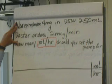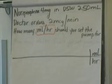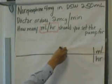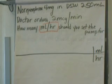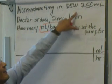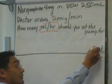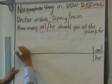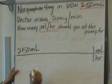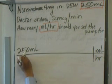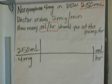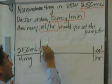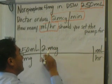Every other piece of information they give us is going to fall above or below this line. If anything shows mL, mL has to be on the top of the line. If anything says hours, hours has to be on the bottom. So, Norepi four milligrams in D5W 250 mL — we ultimately want mL as our final answer on top, so 250 mL goes on the top. The four milligrams of Norepi goes on the bottom. Next piece of information: doctor orders two micrograms per minute, so we put two micrograms per minute over here.